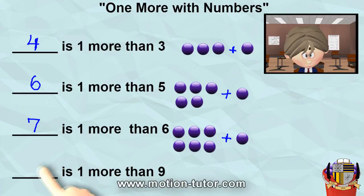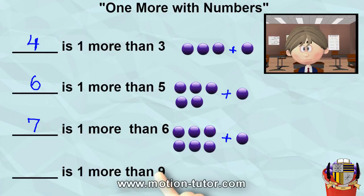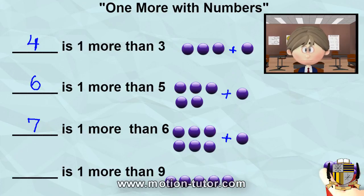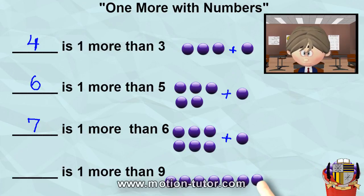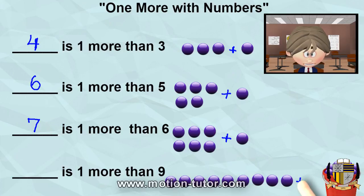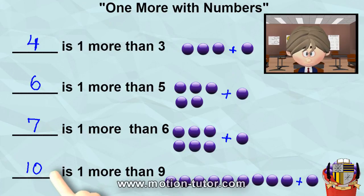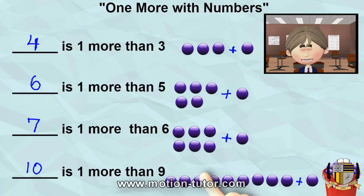And the last example — something is one more than nine. Let's get nine: one, two, three, four, five, six, seven, eight, nine. So that's nine. One more than nine — so that's all for this little lesson on one more. One more than nine is ten. One, two, three, four, five, six, seven, eight, nine. One more than nine, with numbers, just add one to something.